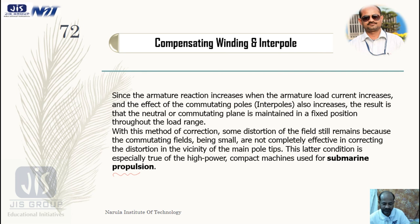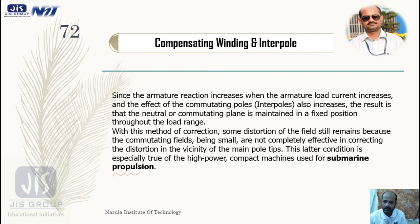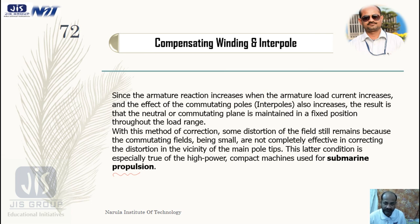With this method of correction, some distortion of field still remains because the commutating field is small — it is a narrow pole — so it is not completely effective in correcting the distortion in the vicinity of the main pole tips. This is especially true for high-power compact machines such as submarine propulsion. This is the basic concept of interpoles. In this class, I have given an overall idea about compensating winding and interpoles, but the details of their working have not been discussed in this lecture.